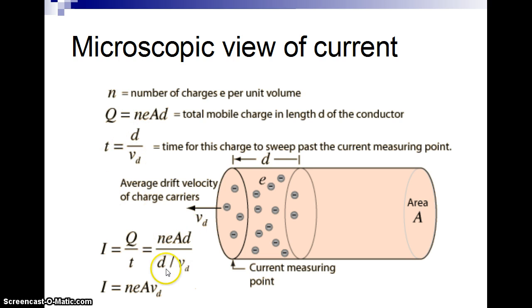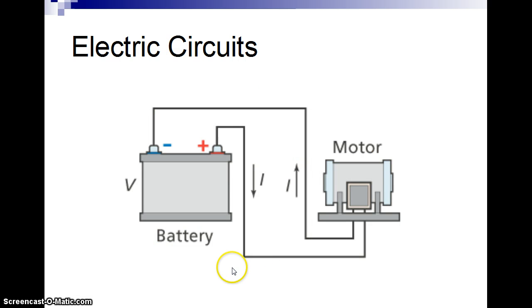So if we rearrange those things, you figure out that the basic definition for electric current is the number of charges per cubic meter, per volume, times the charge of one electron times the area of the wire multiplied by how fast they're moving. And if you look at that, it turns out in most wires, the electrons are moving very, very slow, less than a meter per second in most cases.